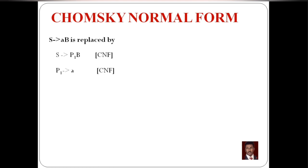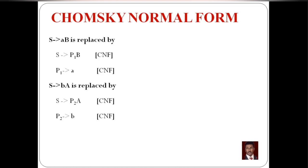If there is a non-terminal and two non-terminals on the right side, the first terminal substitutes for a new non-terminal. The second production S tends to BA: B is a non-terminal, so we substitute P2, giving S tends to P2A, where there are two non-terminals — this is CNF format. Then P2 tends to B, a single non-terminal production.